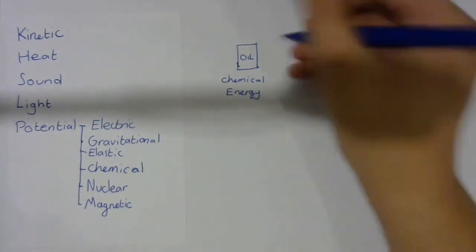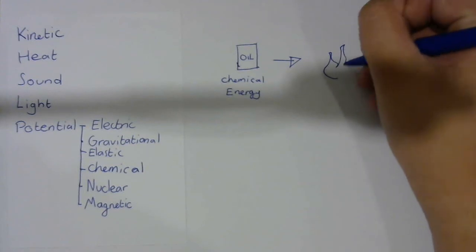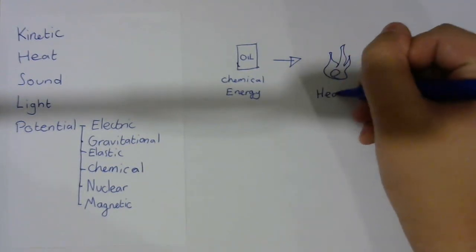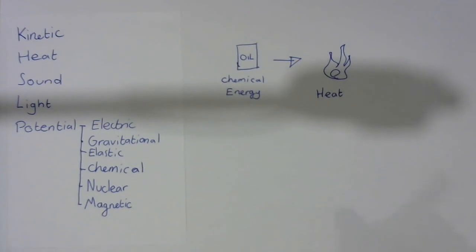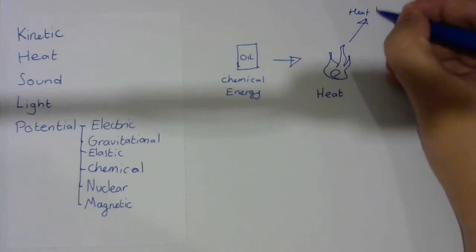We take that chemical energy and we burn it. So we turn this into fire, which is a form of heat or thermal energy. Now some of this heat is going to escape. It's going to go away, so we have some heat loss.